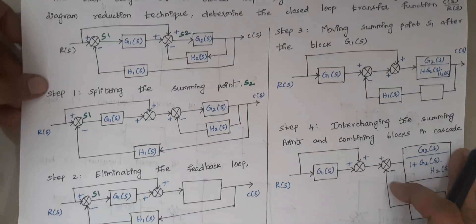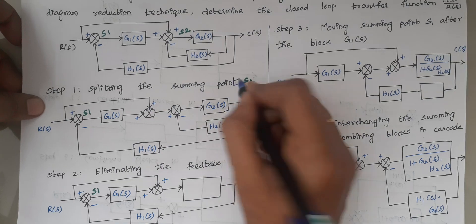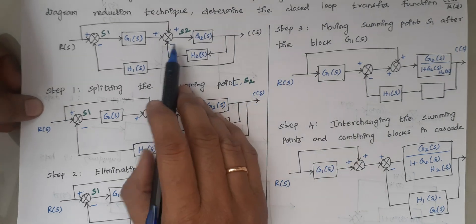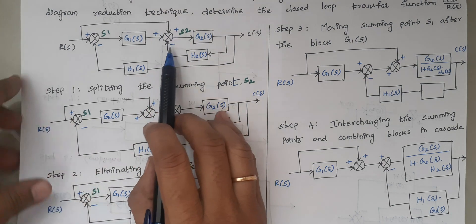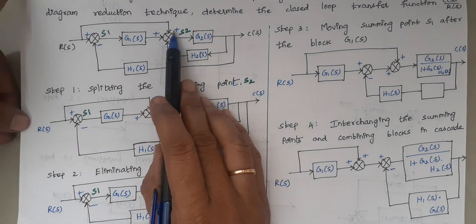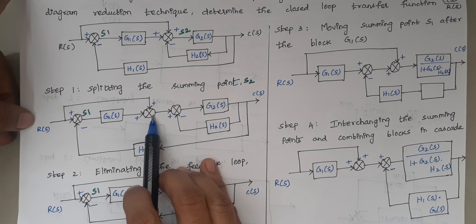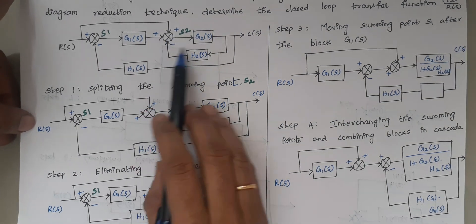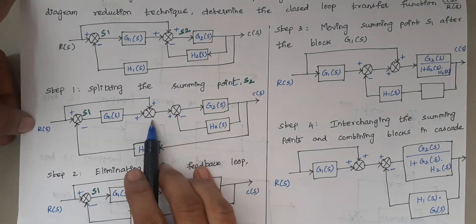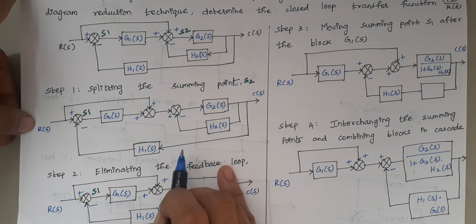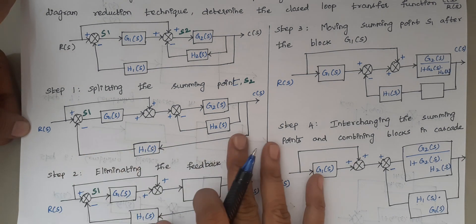Step 1 is splitting the summing point S2. S2 has three inputs: plus, plus, and minus. I am going to split this summing point — it is split into one part with plus and plus, and another part with plus and minus. This is our first step. The remaining parts of the diagram remain as such.